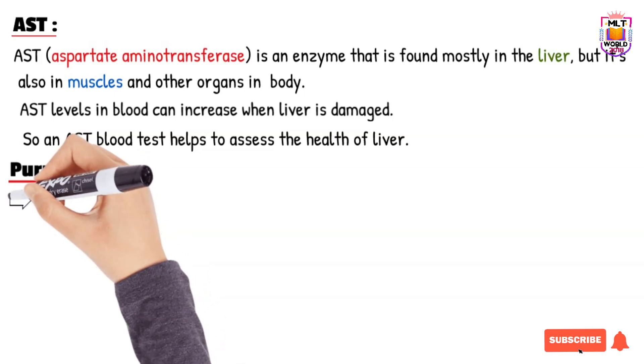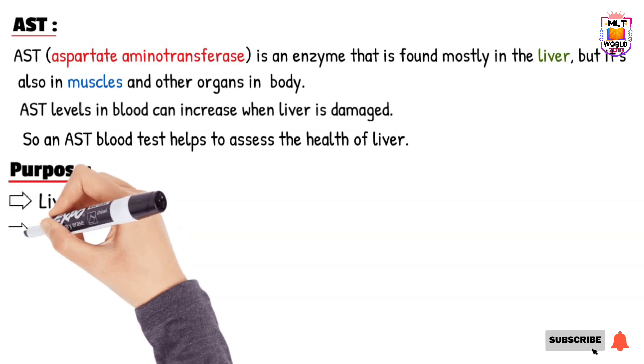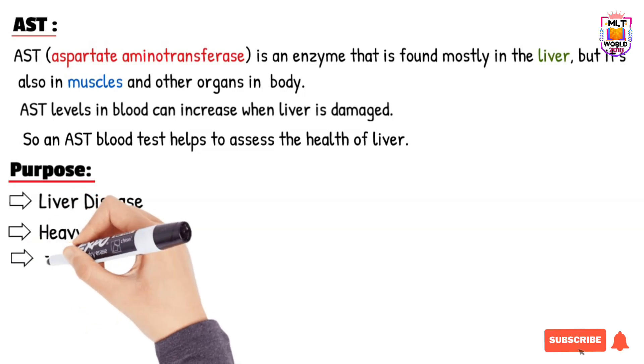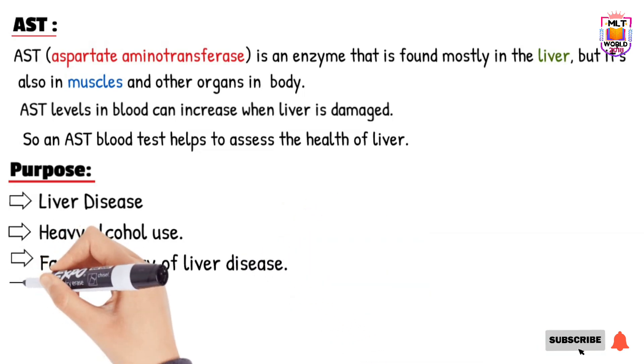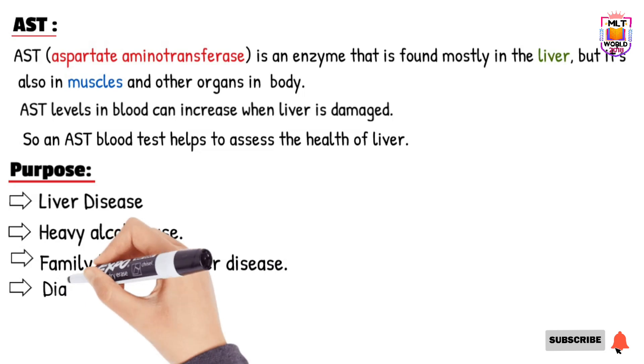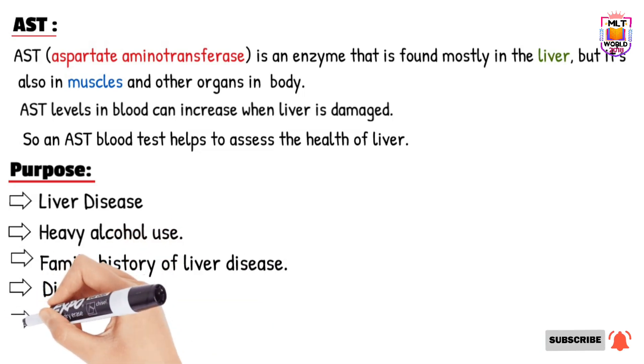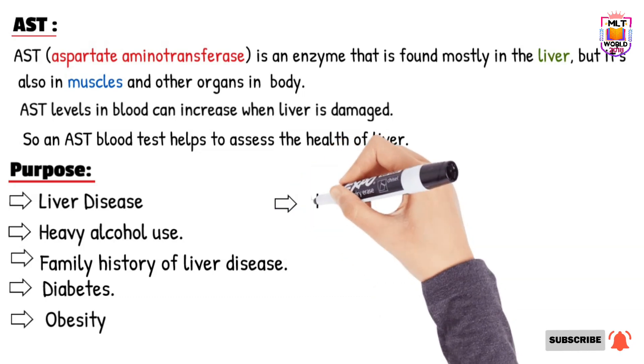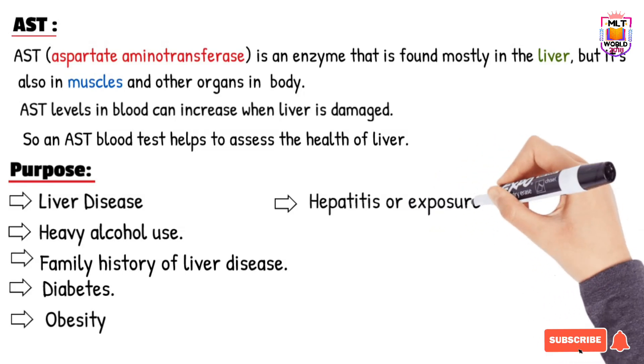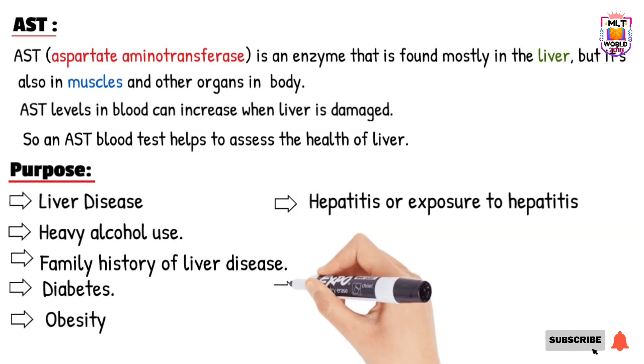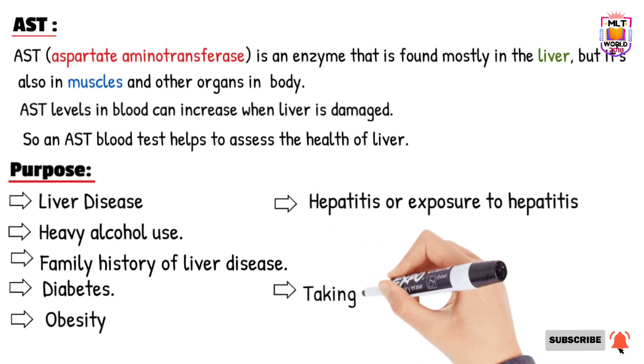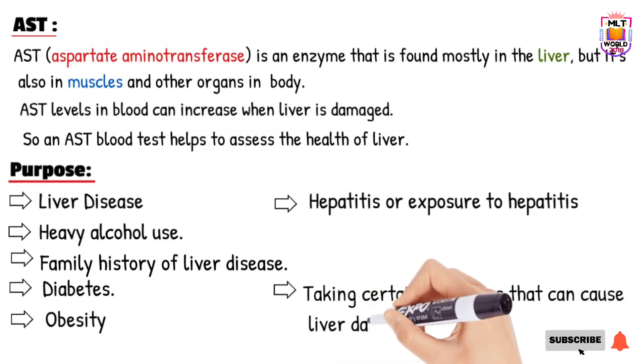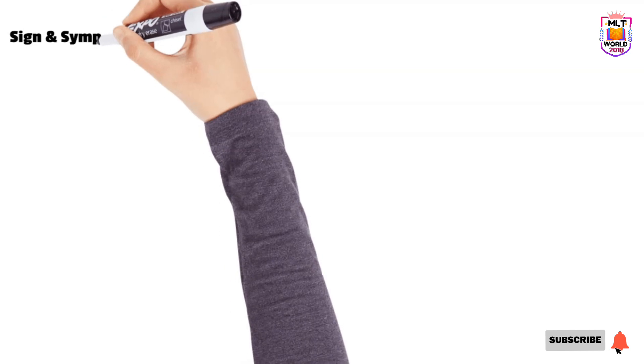What is the purpose to check this test? To find out liver disease or if any person is using more alcohol. If there is family history of liver disease, that time also AST test is done. Other reasons are diabetes, obesity, hepatitis, or anyone who has exposure to hepatitis. And certain medicines also can cause increased level of AST. So if anyone is taking certain medicines, doctors will order this test to check if the liver is functioning properly or not.